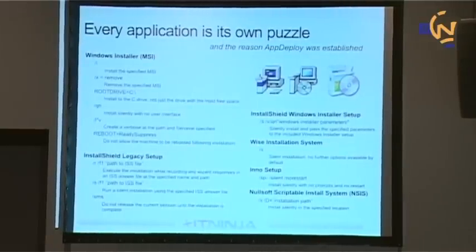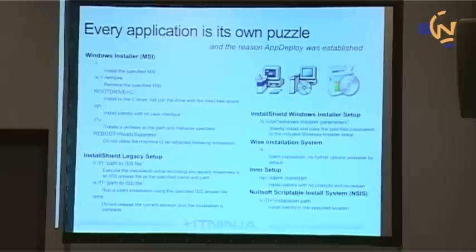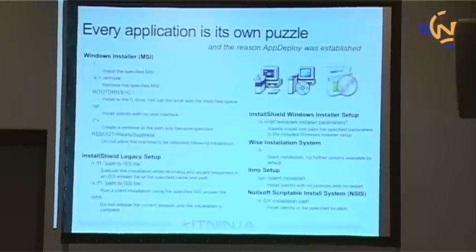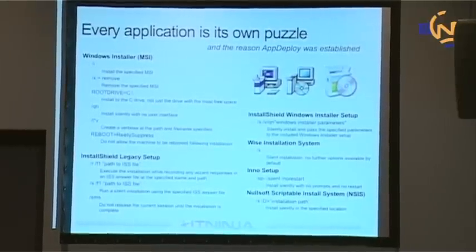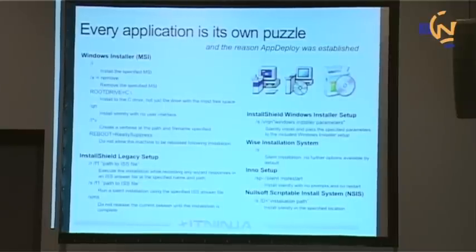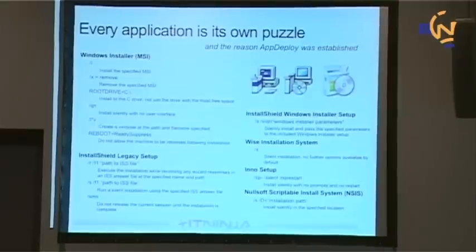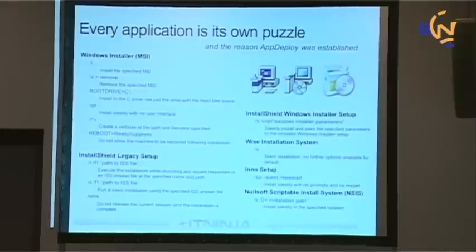The tips on these slides are hard to read — if you have an opportunity to come by the KACE booth, I've got some posters with this information to hand out. Basically, every application is its own puzzle. There are tools like Bundle Commander that will help you determine what they are. Hopefully AppDeploy — now IT Ninja — is a place where you can find out what the different switches are. That was the reason I started AppDeploy in the first place: to catalog what I had found out when I realized I couldn't find those details anywhere else.